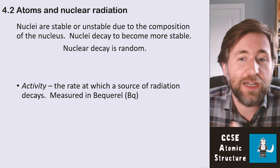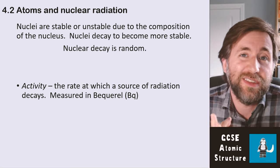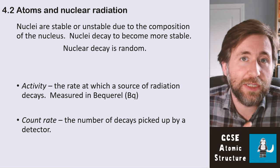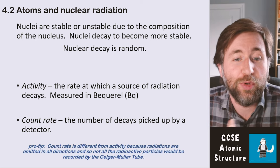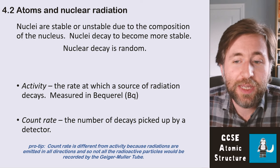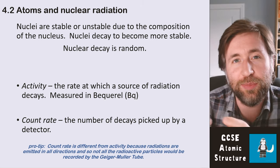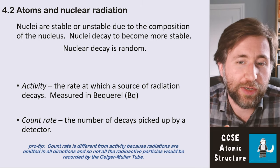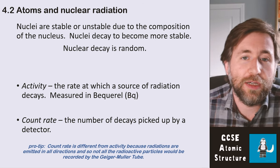Some definitions you need to know: activity is the rate at which a source of radiation decays, and that's measured in becquerel, which means per second — how many decays there are per second. Count rate is the number of decays actually picked up by a detector, so that can be slightly different from the actual activity. The number we measure might not be the same as the actual decay rate because those radiations can go in all directions and we're using a specific piece of apparatus to measure at a specific point in space.